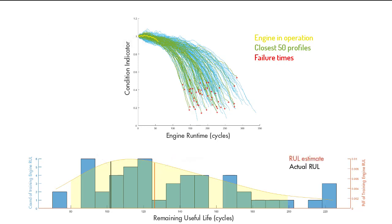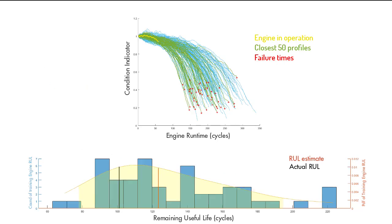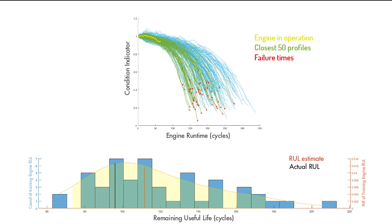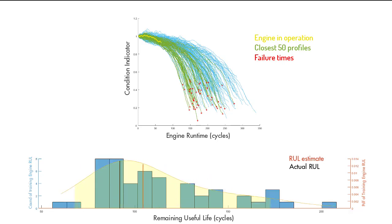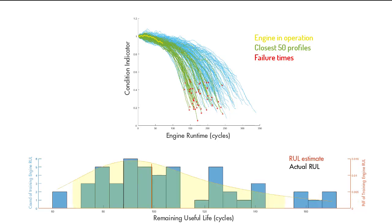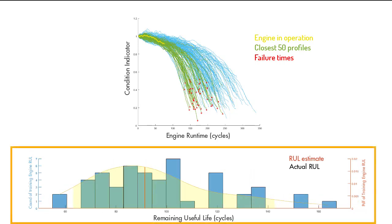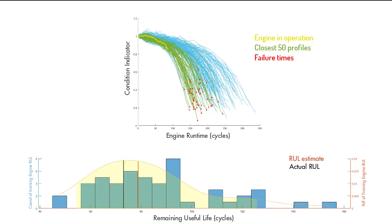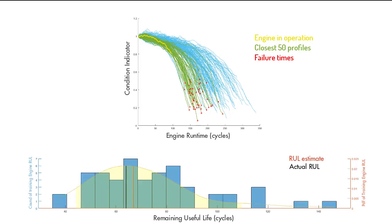Let's play the rest of the animation. As we just discussed, at each iteration, the similarity model finds the closest paths that are shown in green and computes the RUL using a probability distribution plot. On this plot, the orange line shows the predicted RUL and the black line shows the actual RUL. What we notice here is that the predicted RUL gets closer to the actual RUL as the similarity model gets more and more flight data from our engine over time.